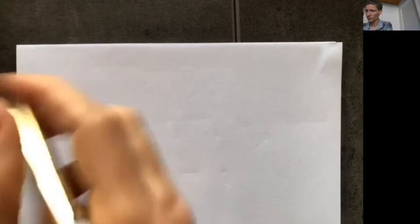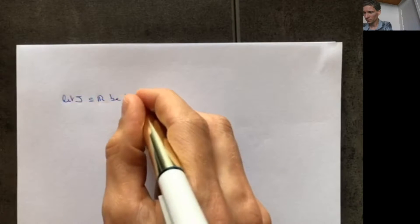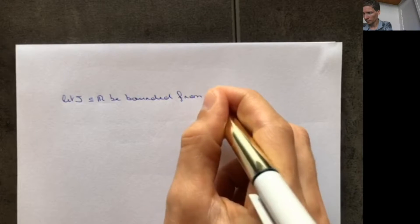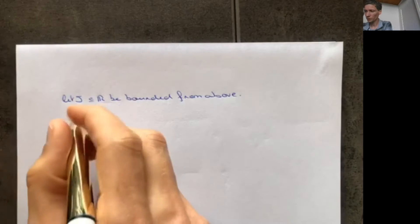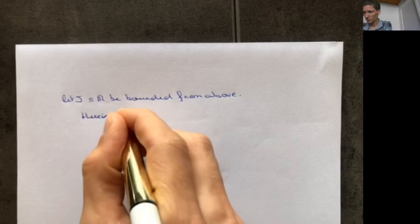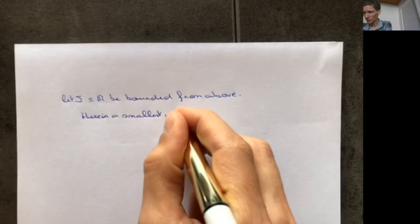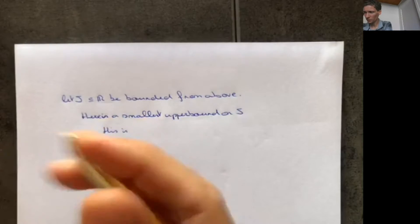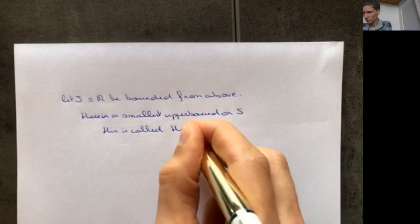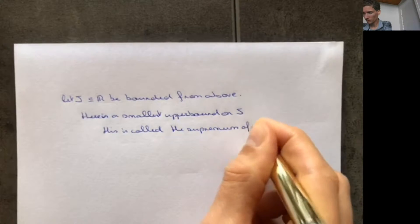We need these notions in order to define a supremum and an infimum. Let S be a subset of R and assume that it's bounded from above. If it's bounded from above, then there's at least one upper bound. However, we can be more precise: if S is bounded from above, then there is the smallest upper bound on S, and this number is called the supremum of S.